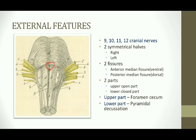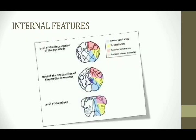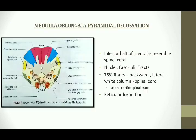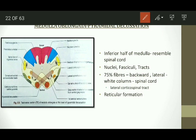The lower part of medulla consists of the pyramidal decussation. The pyramidal or motor decussation level is the lowermost section and resembles the spinal cord. It consists of various nuclei, fasciculi, and tracts — nuclei are present in the grey matter and fasciculi and tracts arise from the white matter. About 75% of the pyramidal decussation fibres cross at this level, travelling laterally and backwards, then descending down in the white column of the spinal cord.